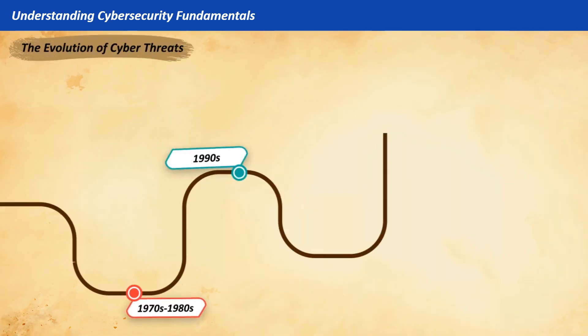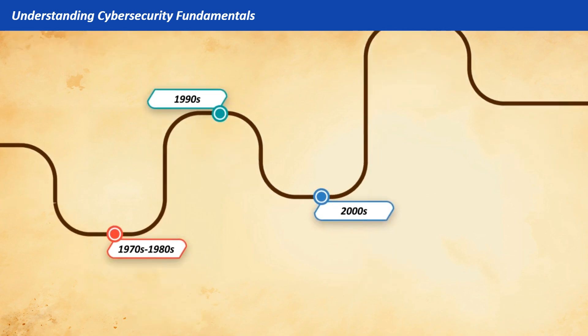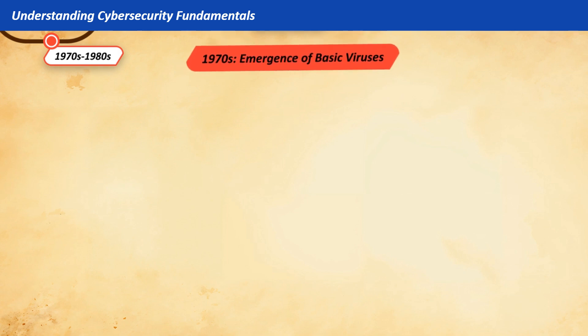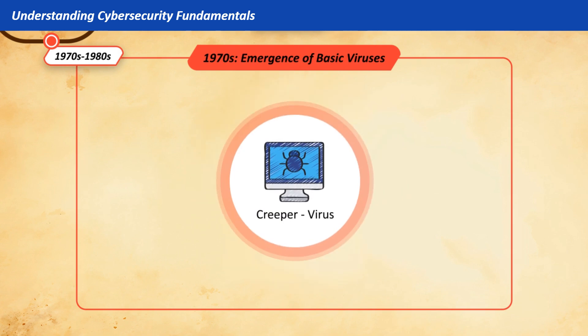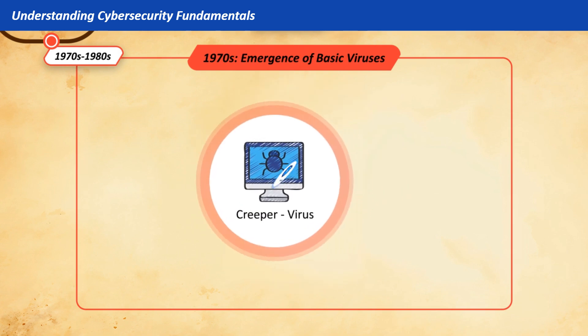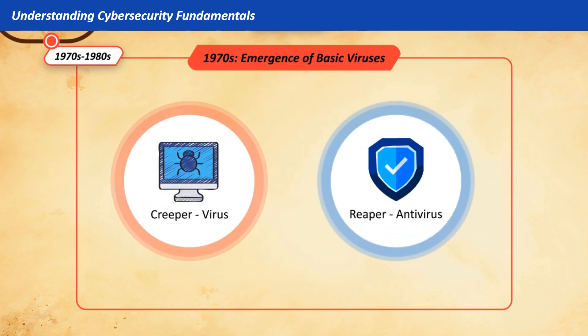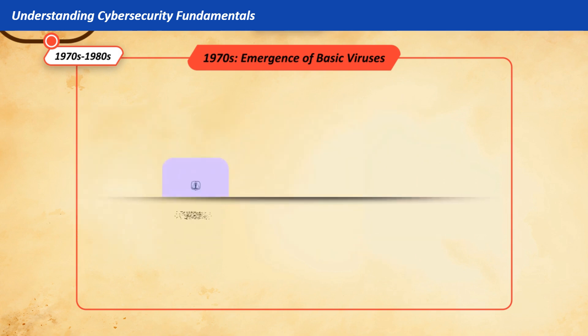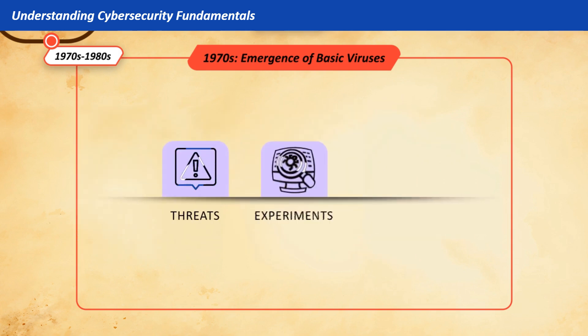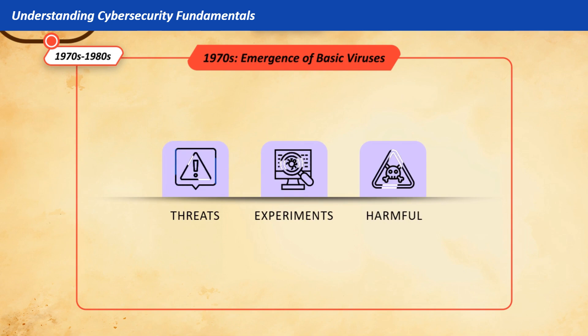The Evolution of Cyber Threats. Early Days of Computing — 1970s. In the 1970s, the first known computer virus, Creeper, appeared, followed by Reaper, which was created to remove it. These early threats were mainly experiments and not very harmful.